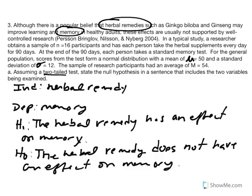This is the basic structure of a two-tailed hypothesis: state the independent variable and indicate it has an effect on the dependent variable in H₁, or does not in H₀. We are not specifying the direction — whether we expect the sample mean to fall above or below average, or increase or decrease memory. We just expect it to have an effect.